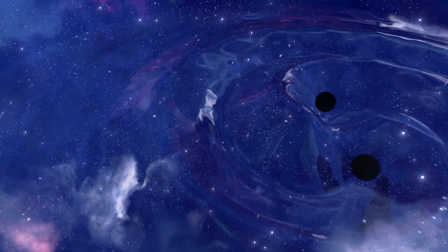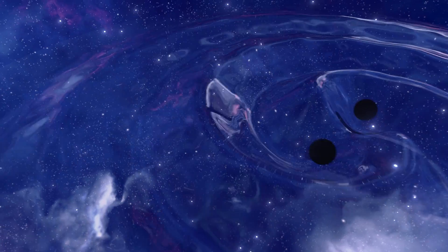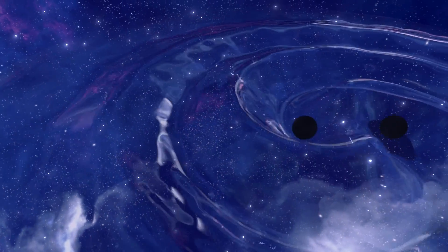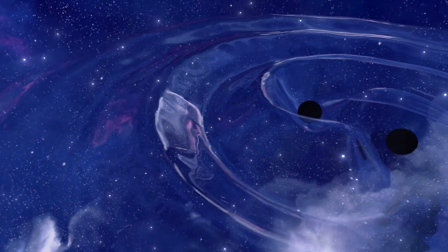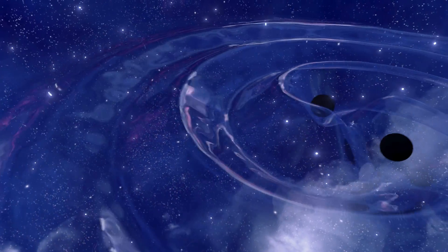While orbiting each other, gravitational waves at twice the orbital frequency radiate away from the center of origin. These waves carry away energy from the binary system.